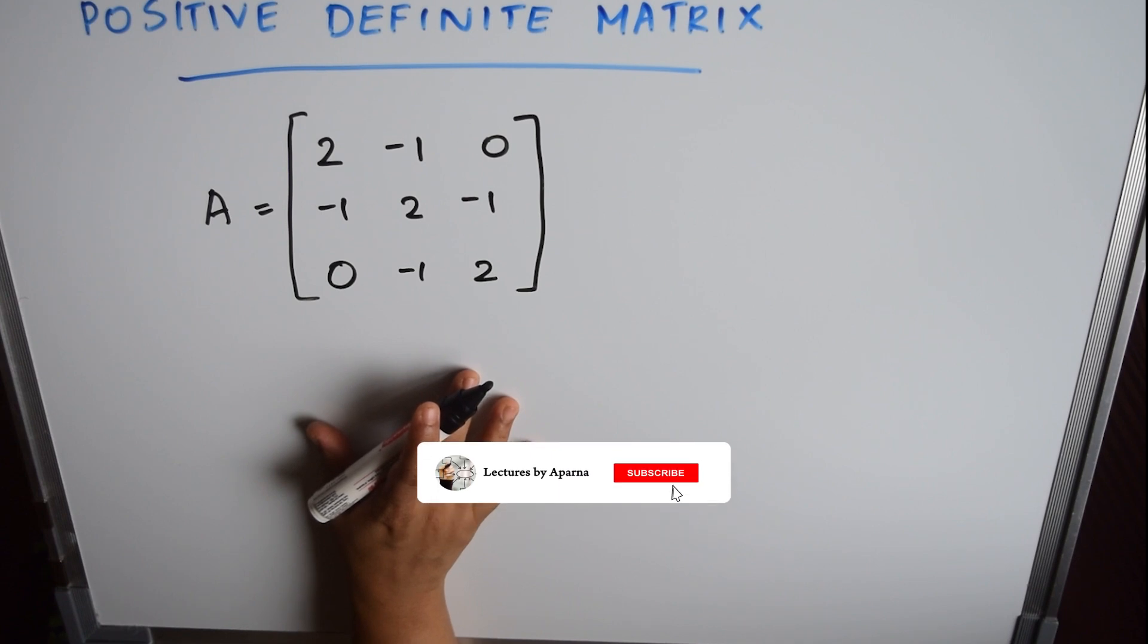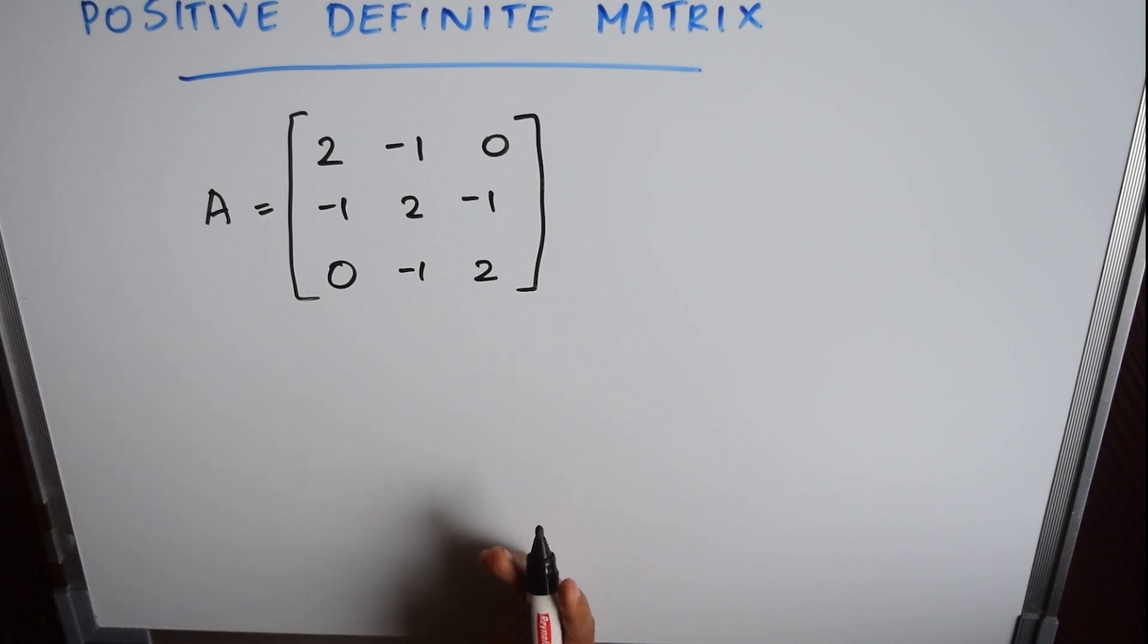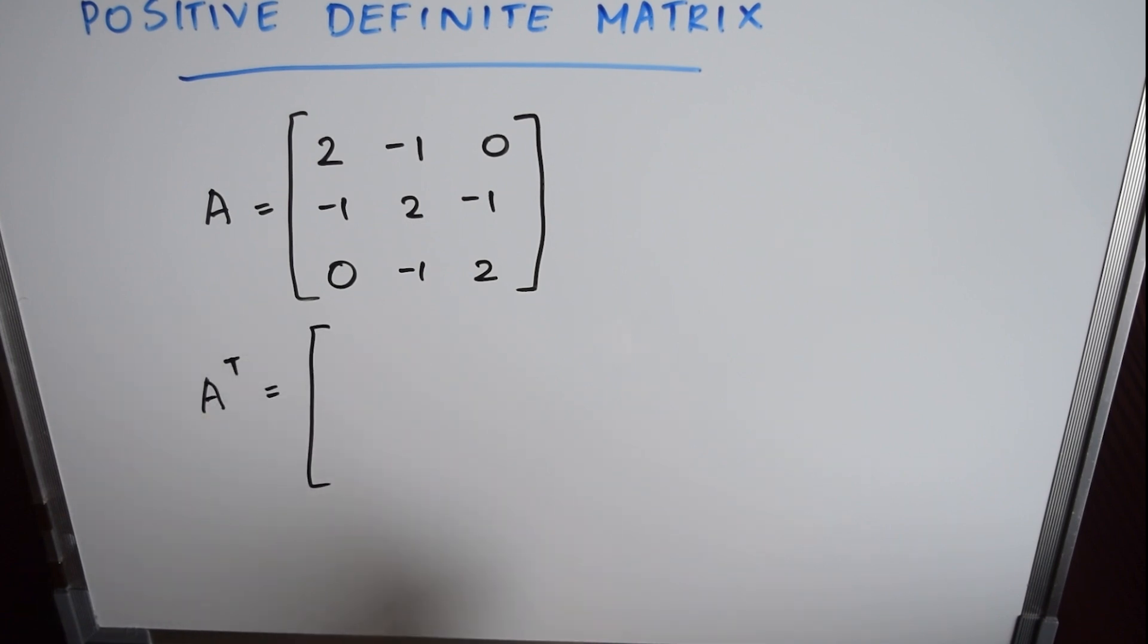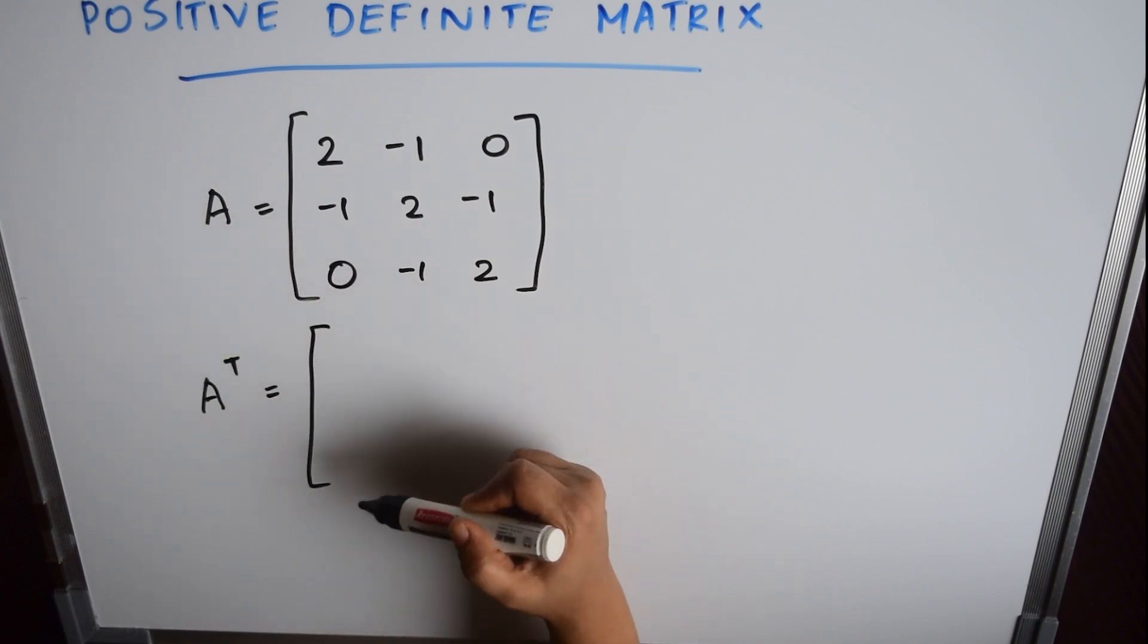For a matrix to be positive definite, it should first be a symmetric matrix. To check if a matrix is symmetric, find the transpose of this matrix. So A transpose will be equal to - in the transpose matrix, the first row of matrix A will become the first column.